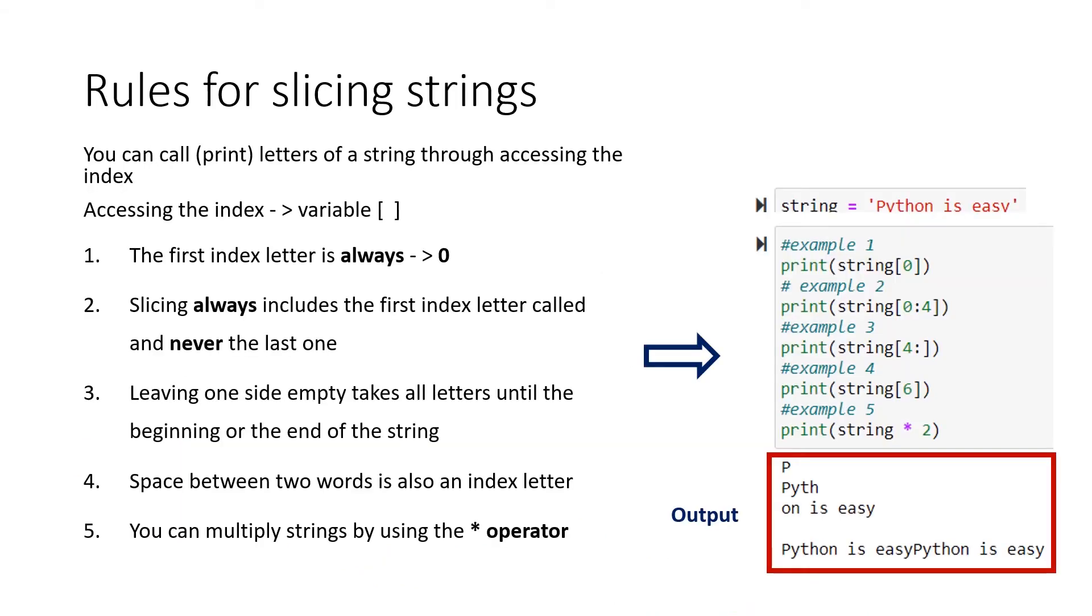If you want to slice a string in Python, there are certain rules you always have to keep in mind. First of all, if you want to slice a variable, you do it by calling the variable, and afterwards, you have to define the index number. In our case, the first index number is P, because the string starts with a P. Now to the rules. The first index letter is always 0.